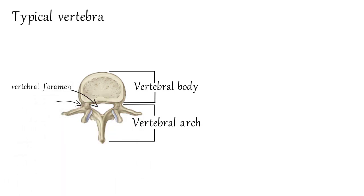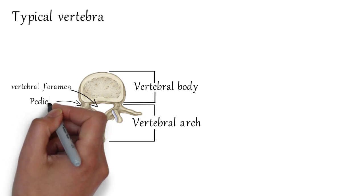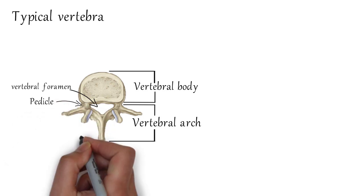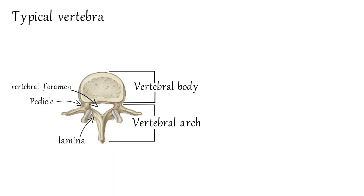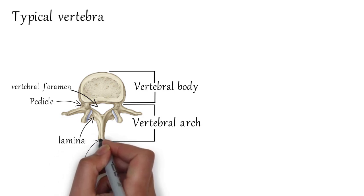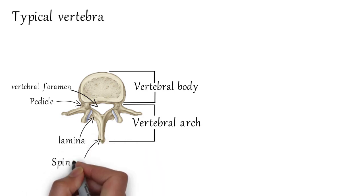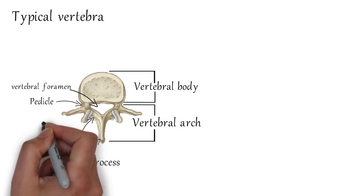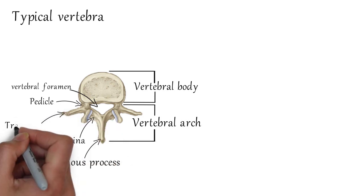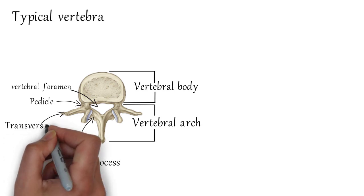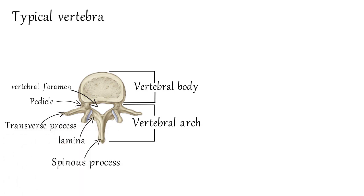The vertebral arch consists of two pedicles and two lamina. This is the spinous process. This is the site for muscle and ligament attachment. This is the transverse process. This is the site for articulation with ribs in the thoracic region.